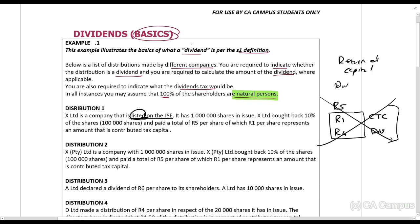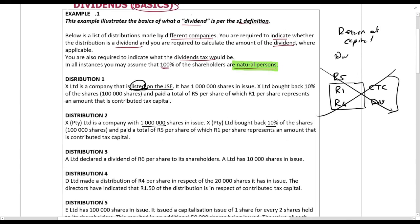Distribution 2: X (Pty) Ltd is a company with 1 million shares. It bought back 10% of the shares and paid 5R per share. It is not a listed company because it's a private company. A Pty Ltd can never be a listed company. They bought 5R a share, of which 1R per share is contributed tax capital, so 1R is CTC and 4R must be a dividend.